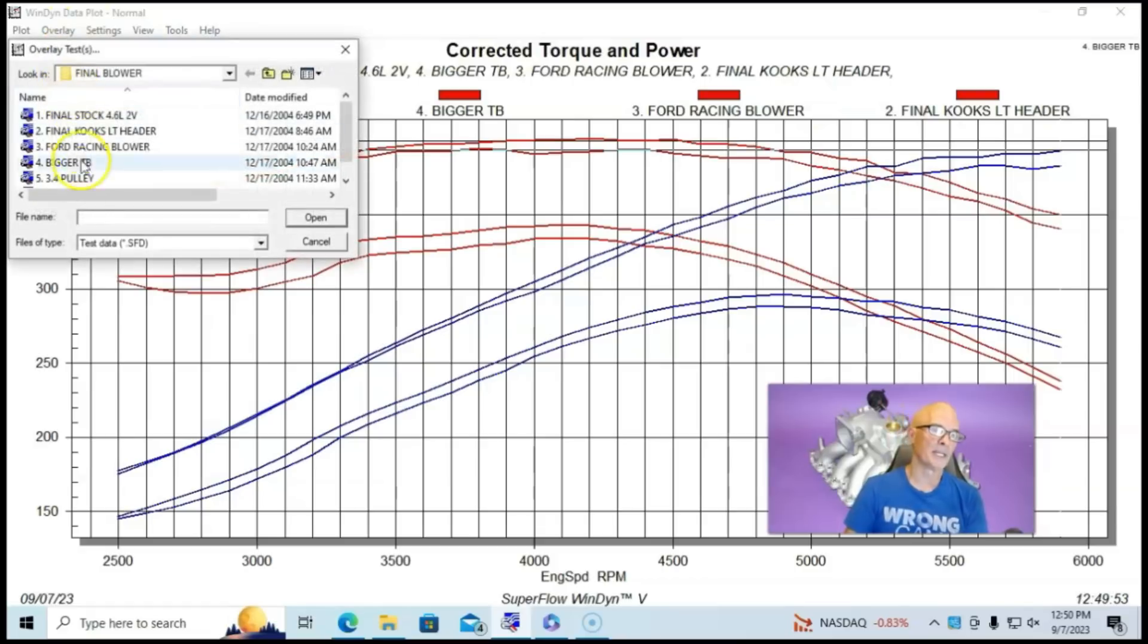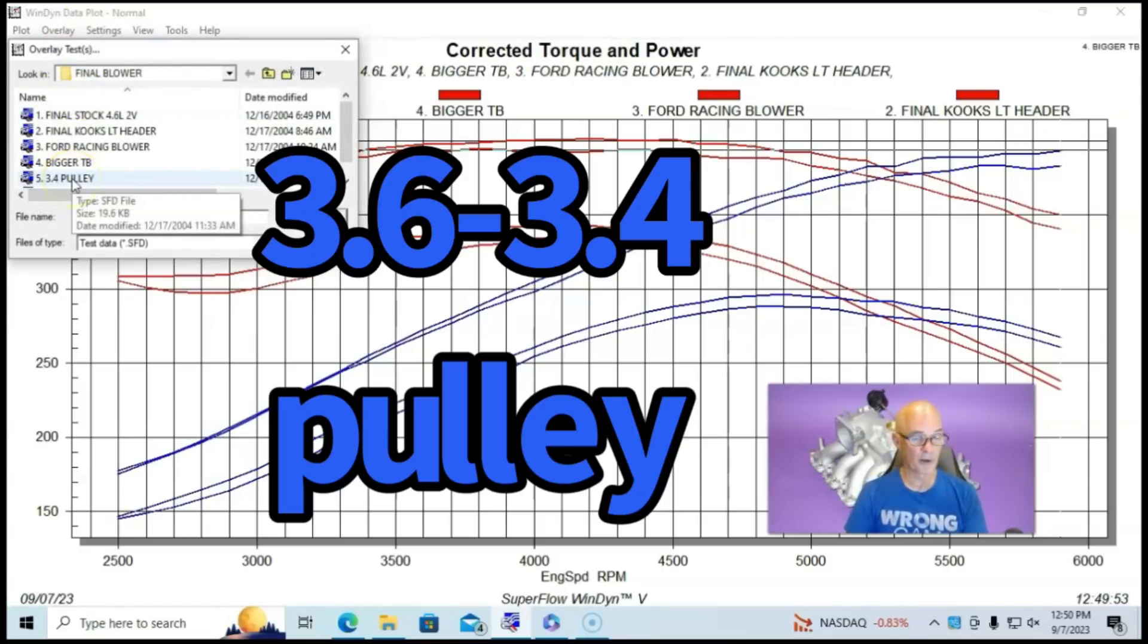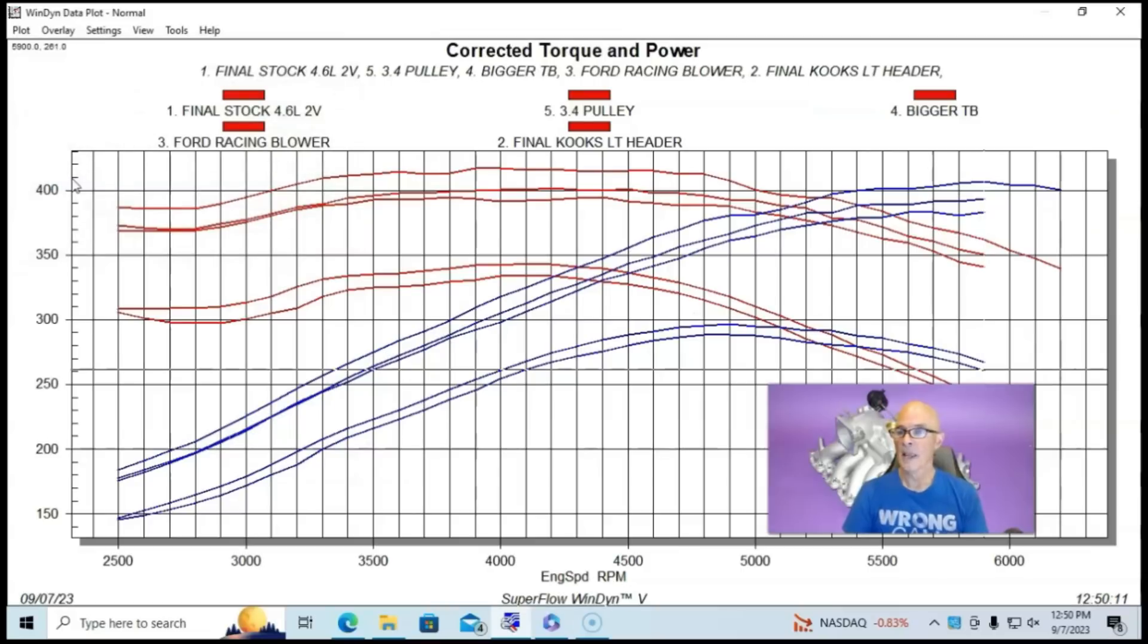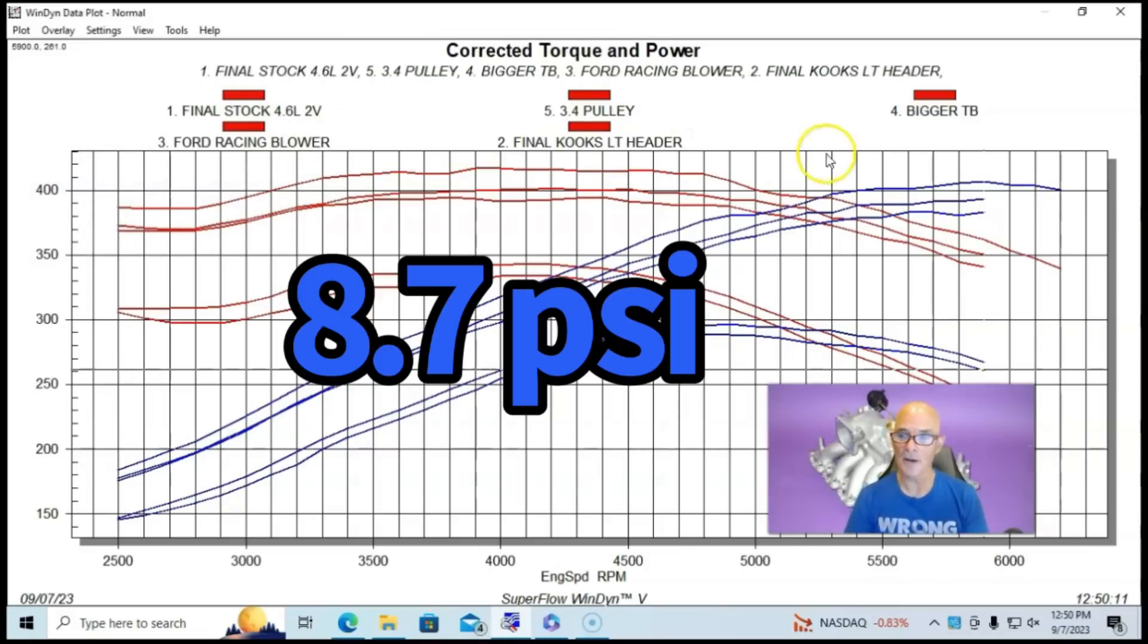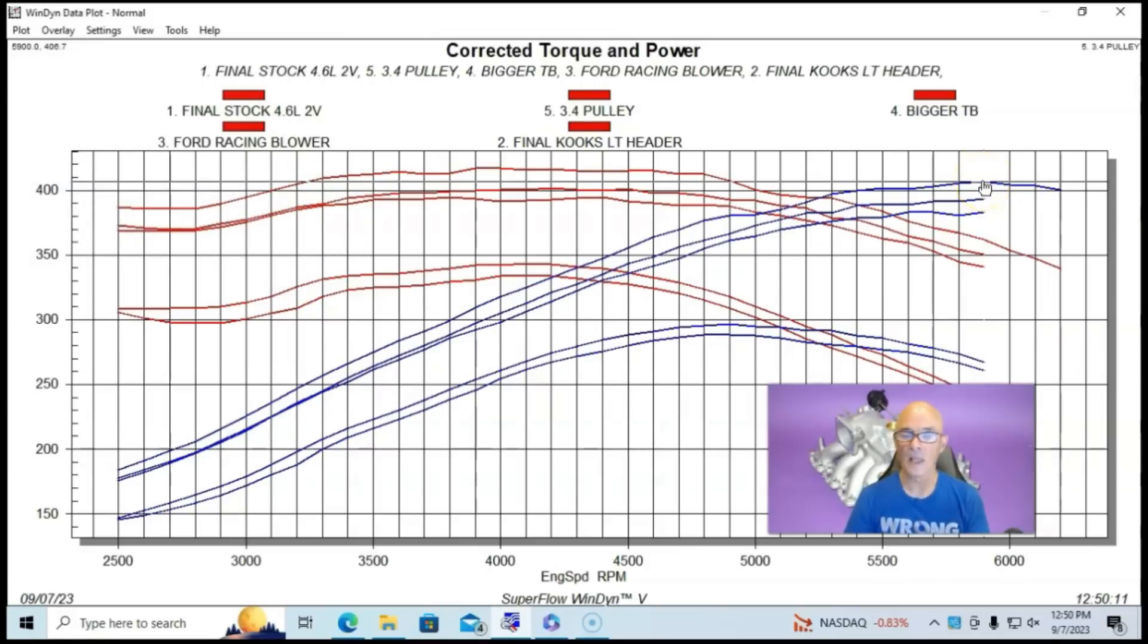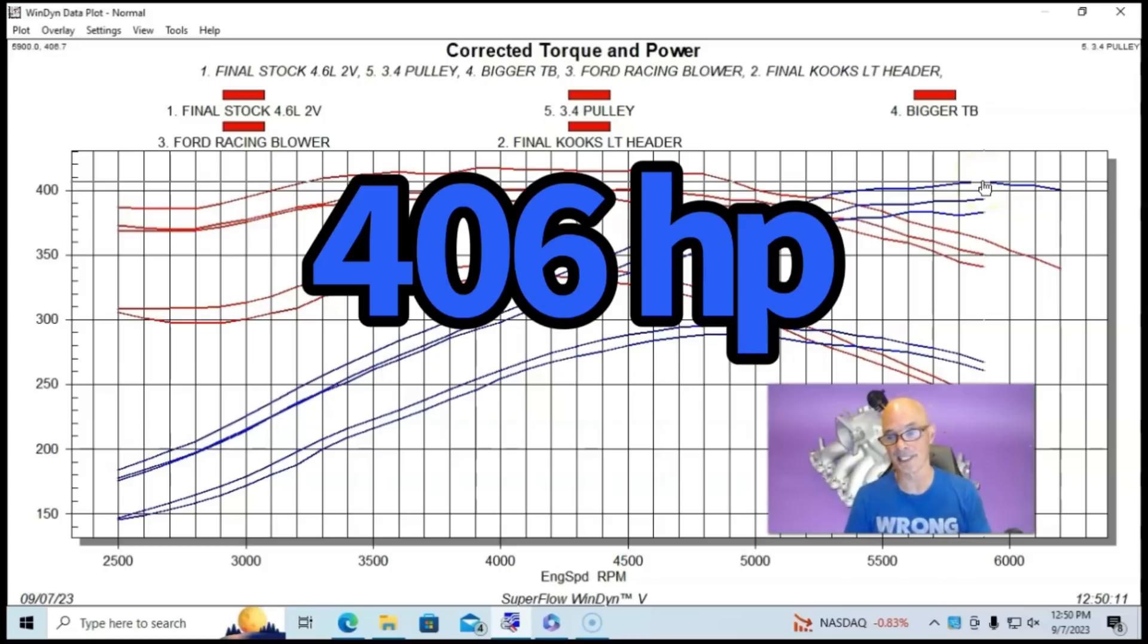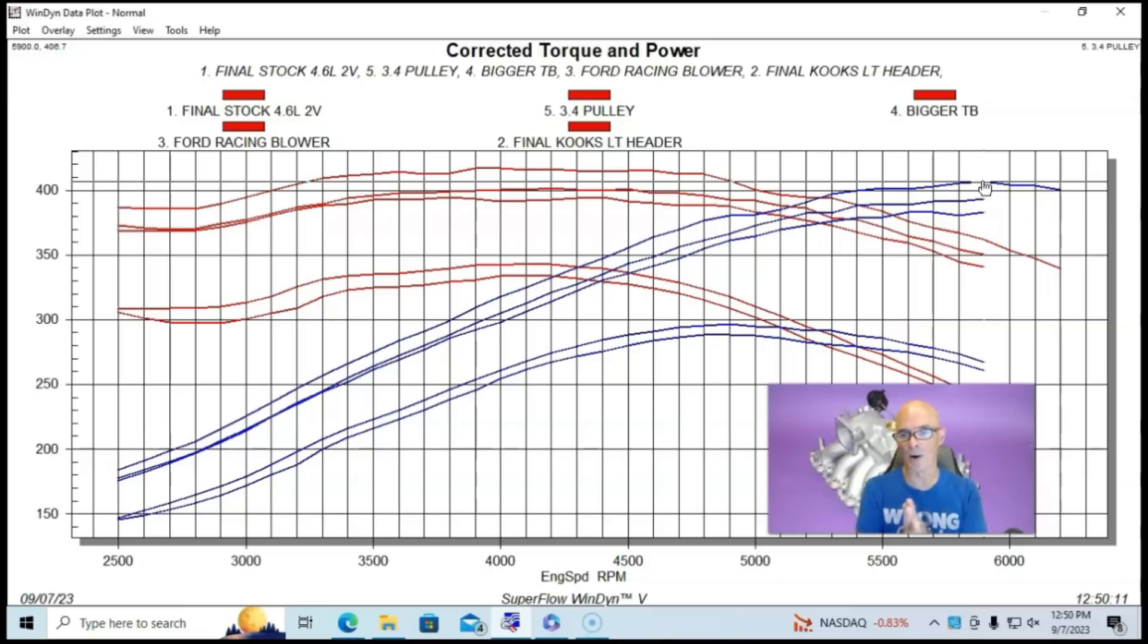Then we did what everybody does with a supercharger. We installed a smaller 3.4 inch pulley and that brought peak boost up to 8.7 pounds. And we were over 400 horsepower, 406.7. So we basically matched the power output of the NA combination.